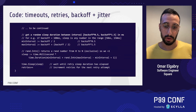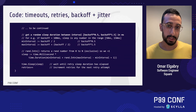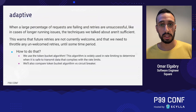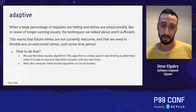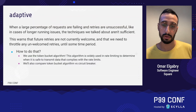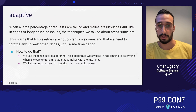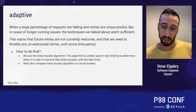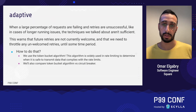Now you might be wondering — are we done yet? The answer is no. Adaptive retries. When a large percentage of requests are failing and retries are unsuccessful, like in case of longer-running issues, the techniques discussed are not sufficient. This indicates that future retries are not currently welcome, and we need to throttle unwelcome requests until some time period. To do that, we use the token bucket algorithm, which is widely used in rate limiting to determine when it's safe to transmit data within limits.